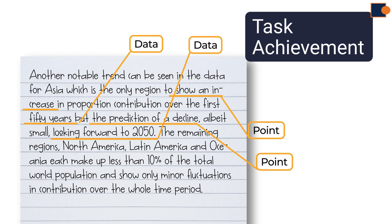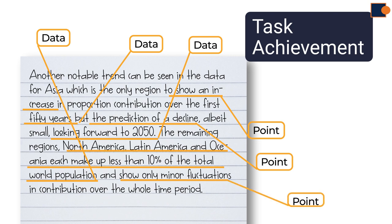The next sentence starts with data, North America, Latin America and Oceania, each make up less than 10% of the total world population. And then, point, by stating show only minor fluctuations. So, here again, overall pattern is clear. Connecting phrase, comparison, point, data. The next idea connecting phrase, comparison, point, and again data.